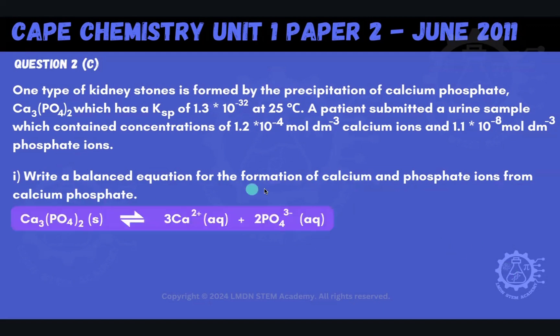So here's our balanced equation. We're going to start with our calcium phosphate in the solid phase, and then equilibrium is going to be set up where we have 3 moles of calcium 2 plus ions in their aqueous phase and 2 moles of phosphate ions in the aqueous phase. And so that's our balanced equation there.